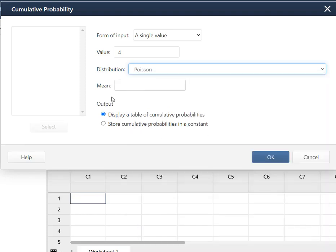So I go down and I pick that. We set our mean or lambda with six and I'm just going to display the table.